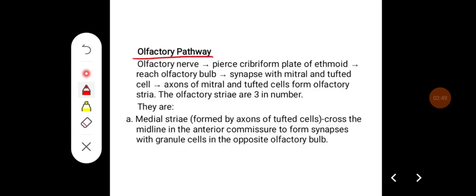Olfactory pathway: olfactory nerve pierce the cribriform plate of ethmoid to reach the olfactory bulb and synapse with the mitral and tufted cells.